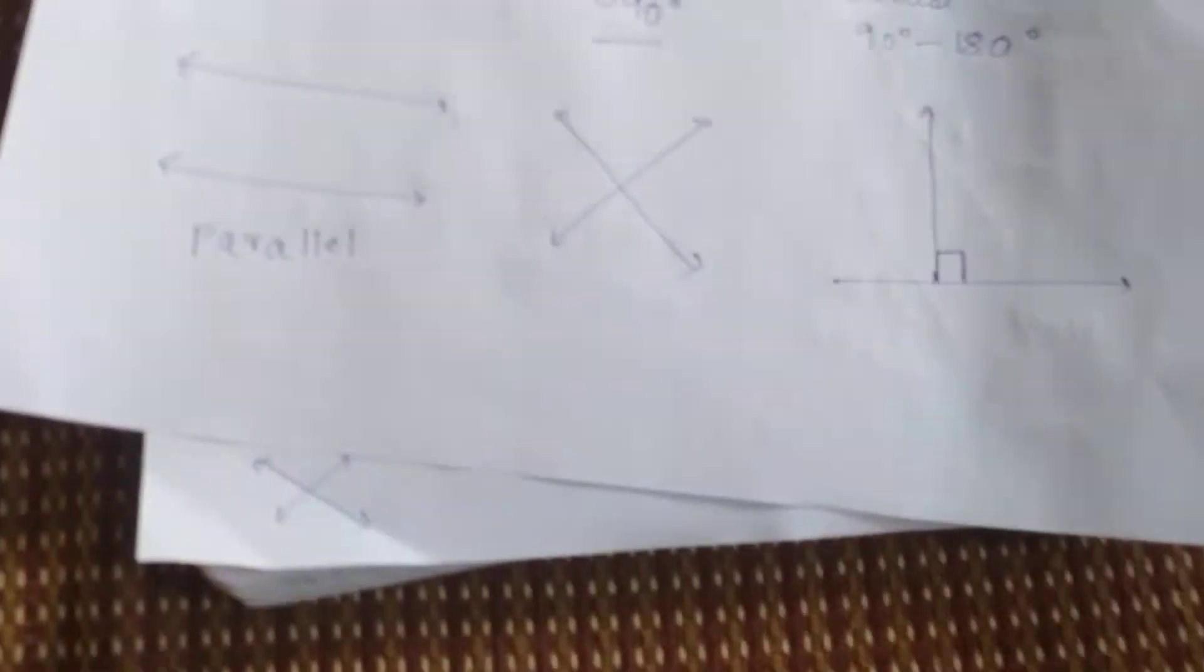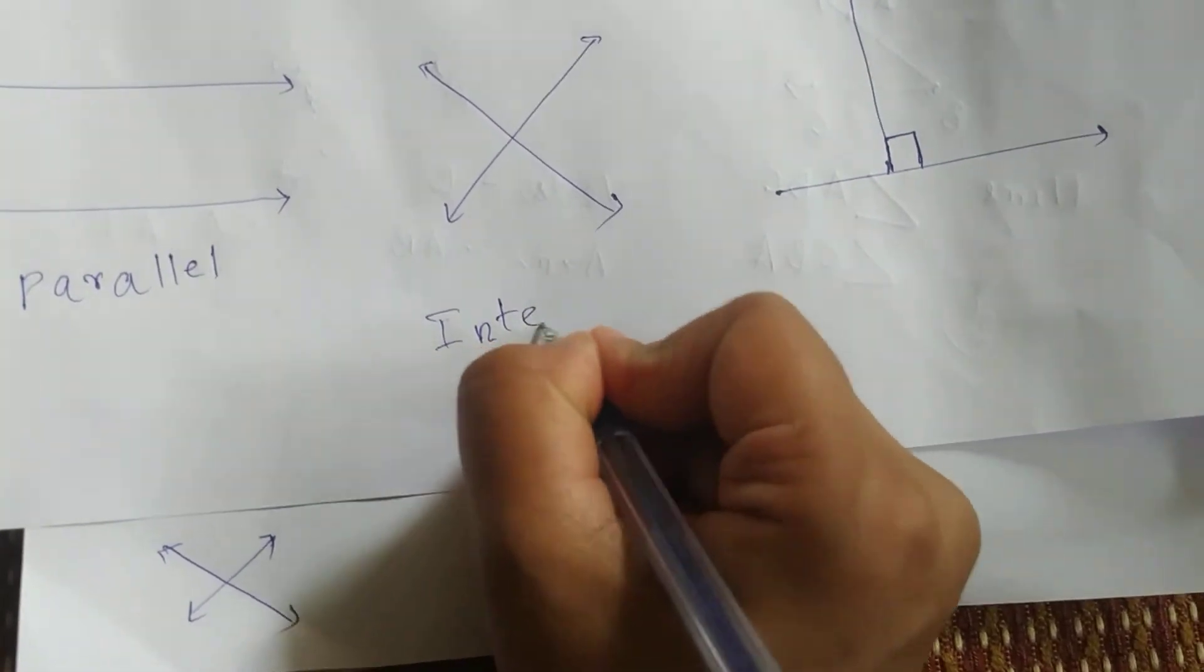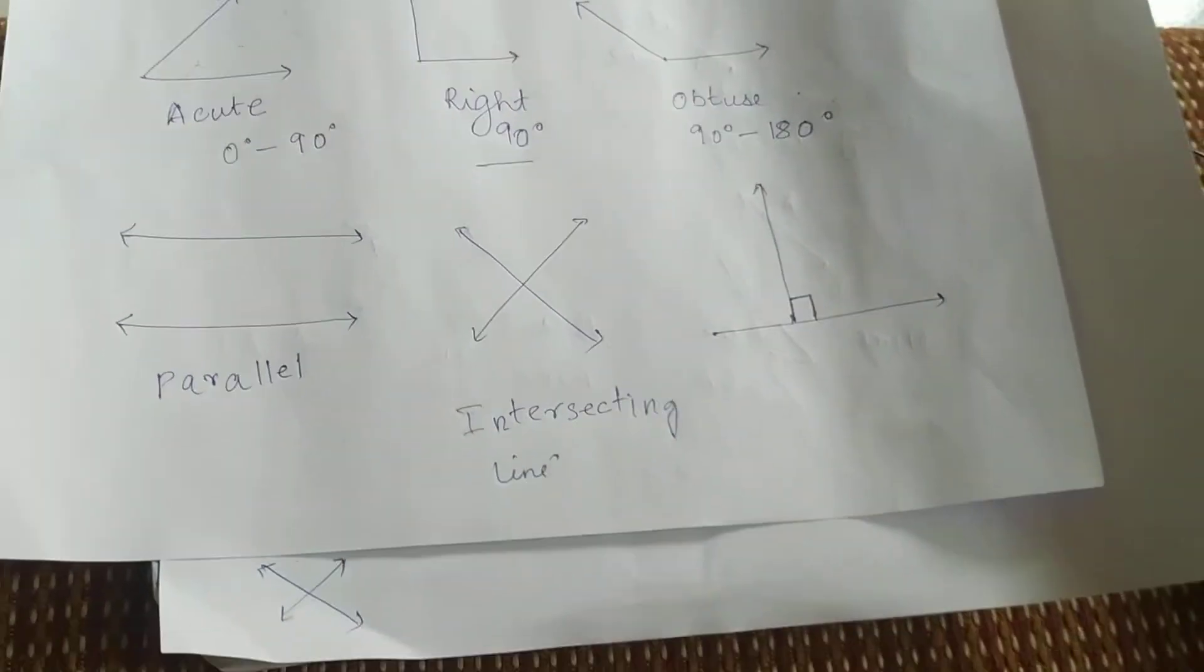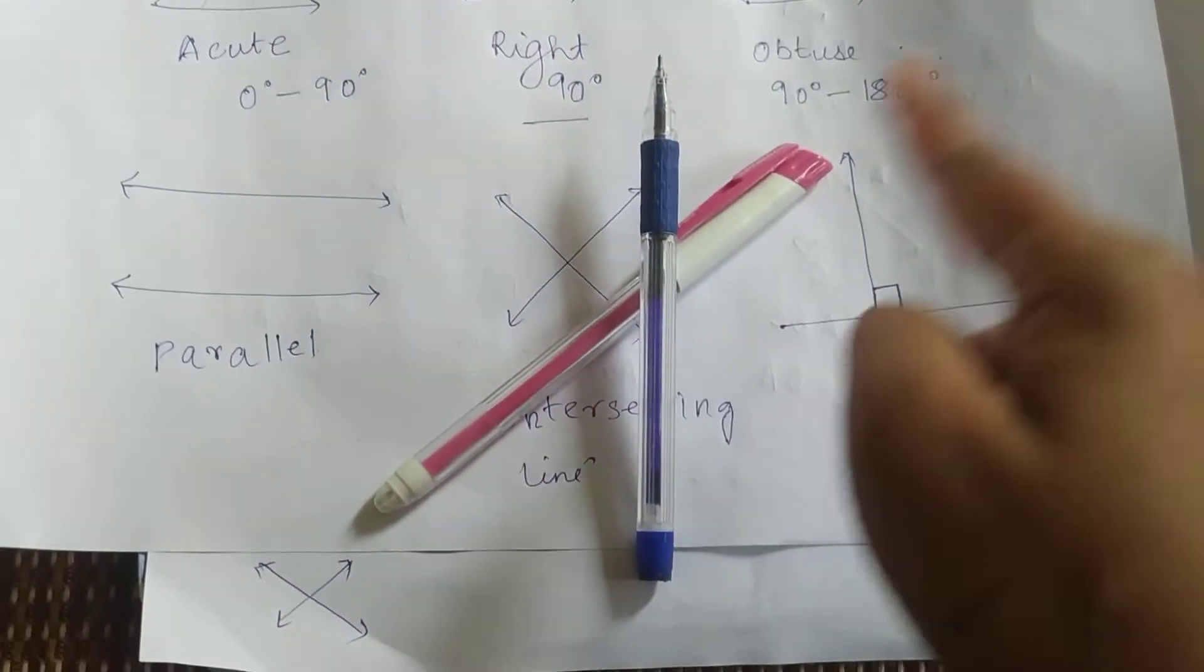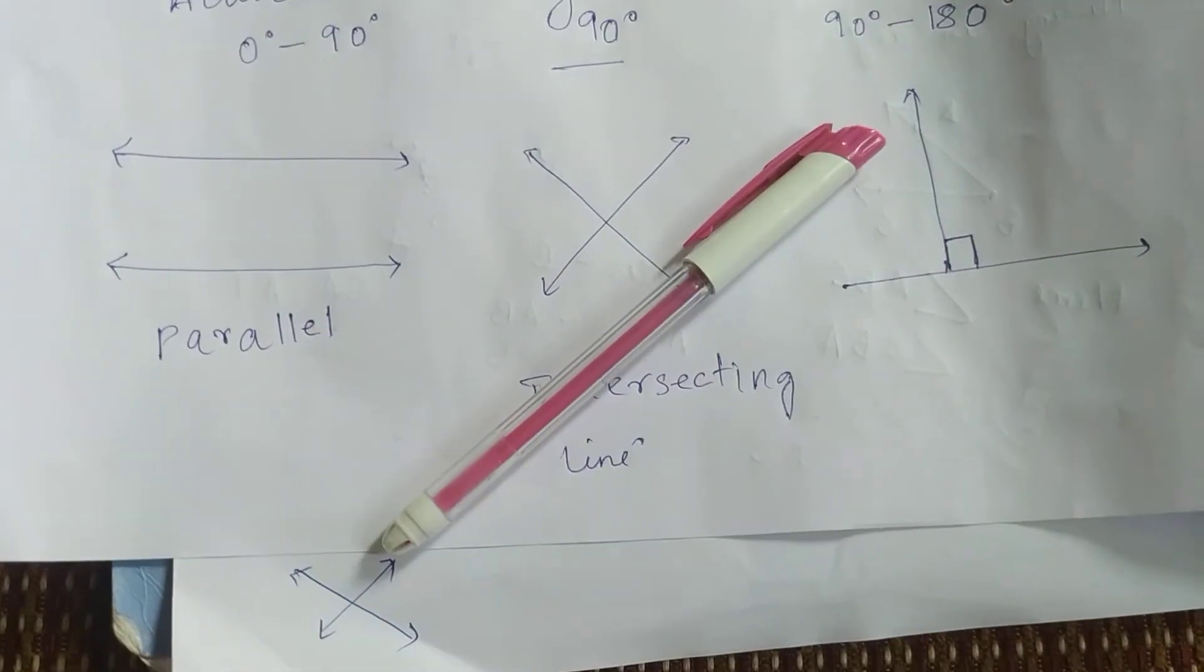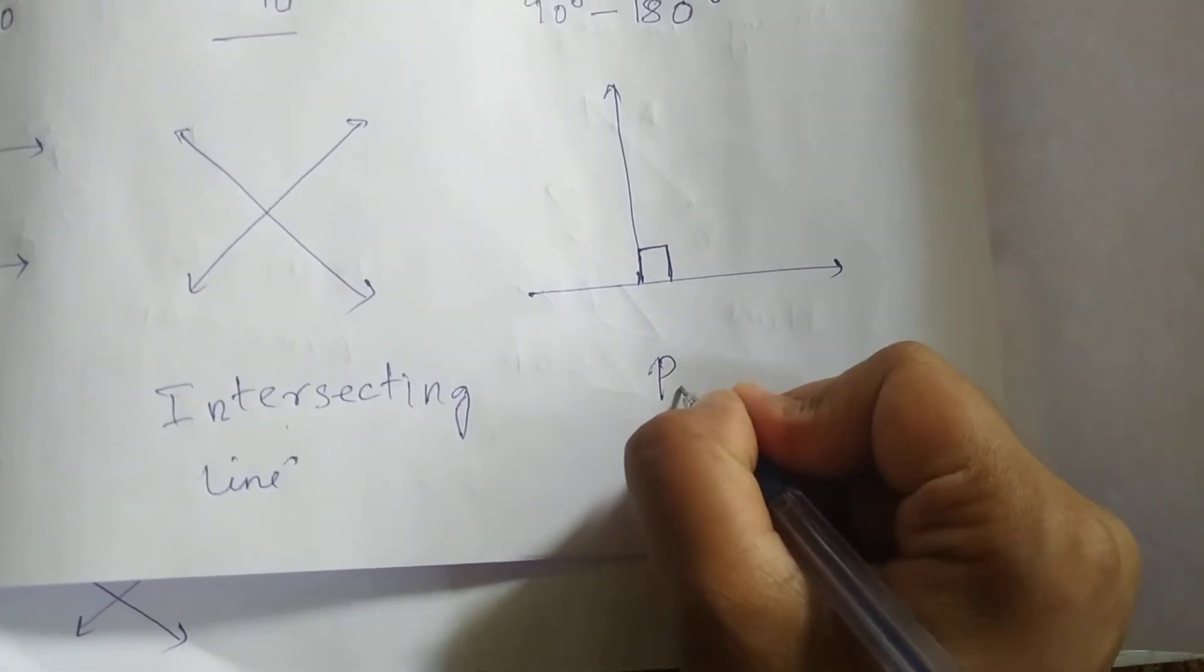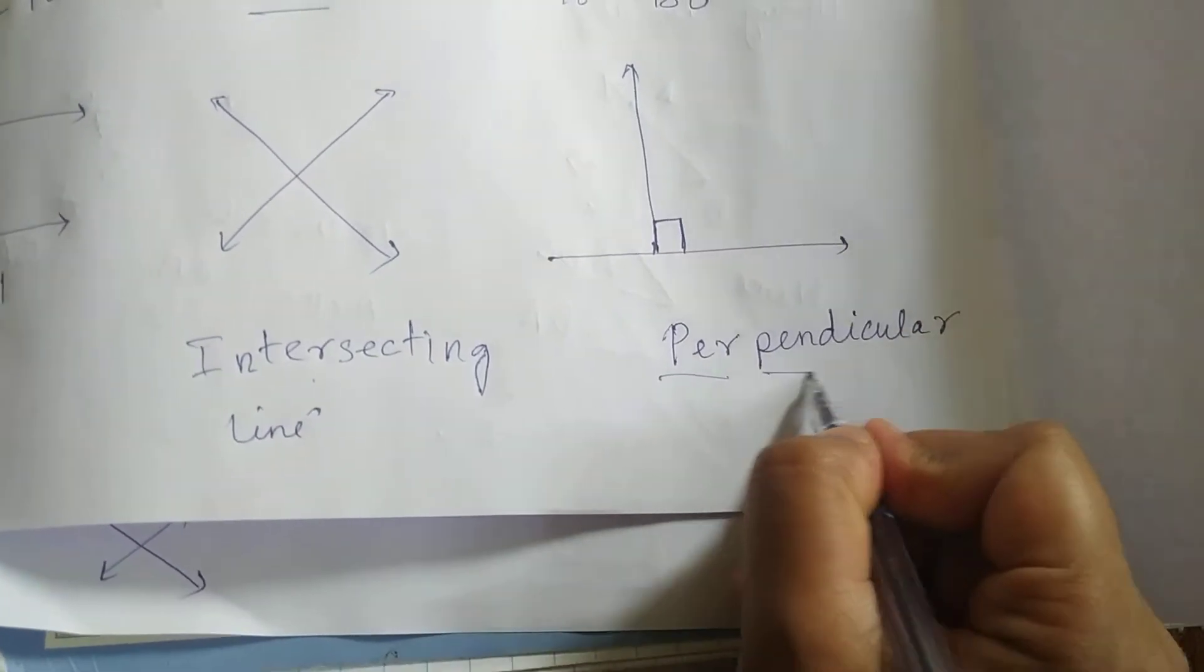Then there is another type of line that is called intersecting. We call it intersecting line. Intersecting line means when two lines cross each other. If these are two lines, these are called intersecting.